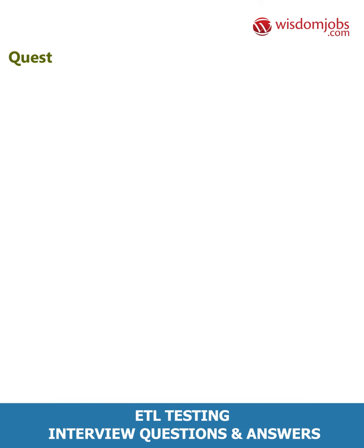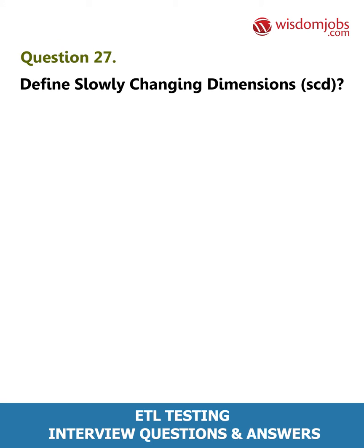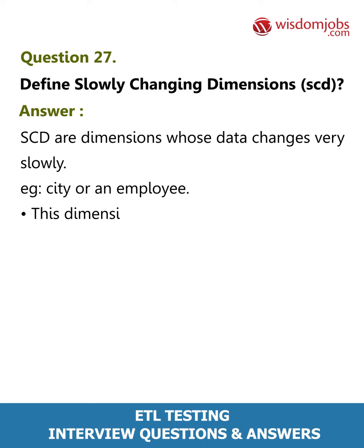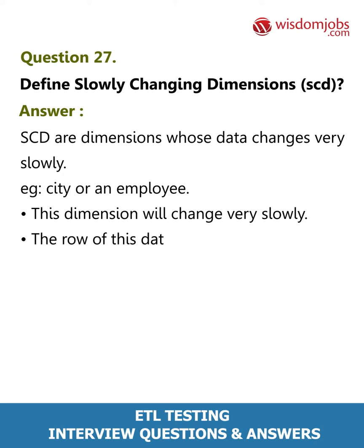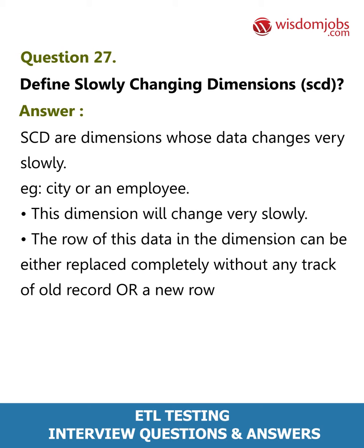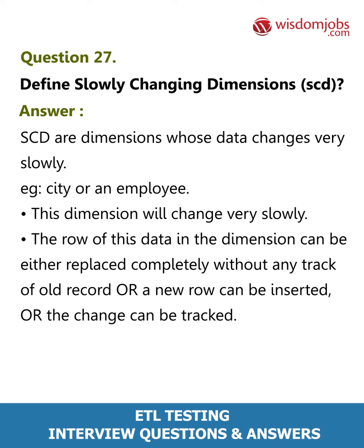Question 27: Define Slowly Changing Dimensions (SCD). Answer: SCDs are dimensions whose data changes very slowly, for example, a city or an employee. This dimension will change very slowly. The role of this data in the dimension can be either replaced completely without any track of the old record, or a new record can be inserted, or the change can be tracked.